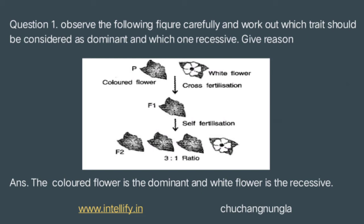From the above given images, we see that the colored flower, when it undergoes cross-fertilization with the white flower, the offspring shows the trait of the colored flower. When the F1 undergoes self-fertilization, we see many traits are occupied by the colored flower. So the answer will be the colored flower as dominant while the white flower is recessive.